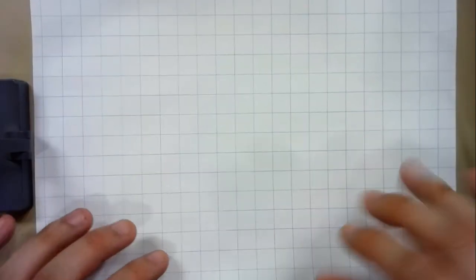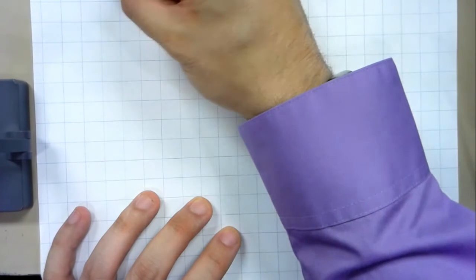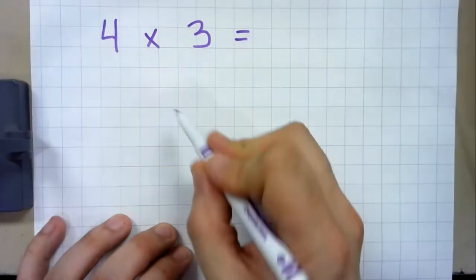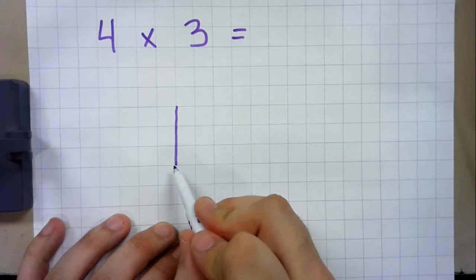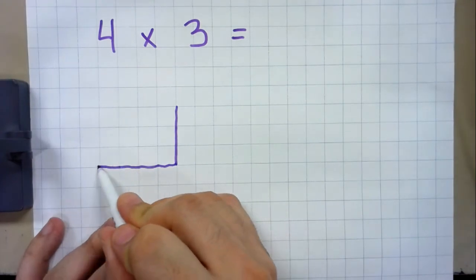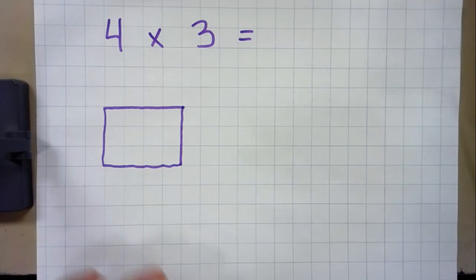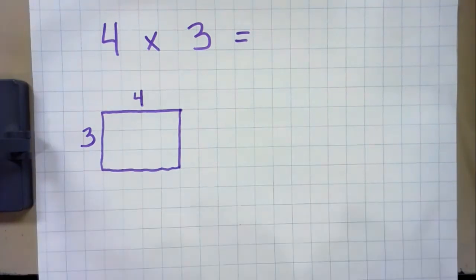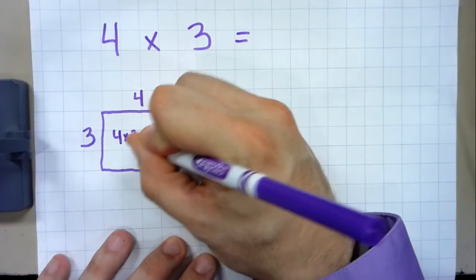You can use graph paper to represent a lot of different forms of multiplication. From a very basic standpoint, I could show four times three by drawing a rectangle that's three units down and four units wide. Four times three is an easy one — four in one direction, three in another. This is a great way to also introduce the skill of finding area, which we'll cover in a geometry unit. Four times three equals 12.